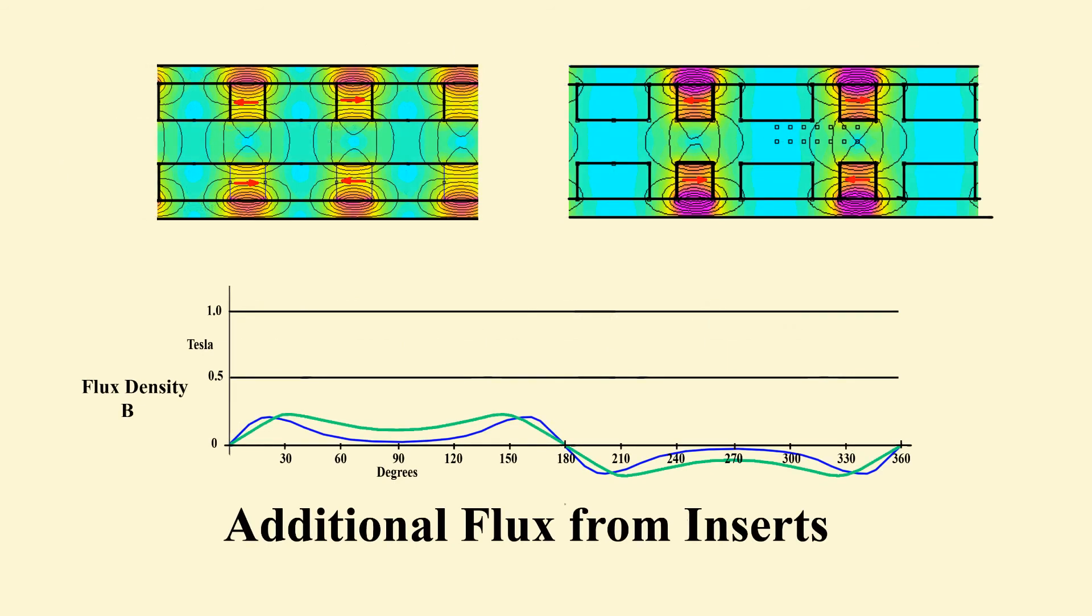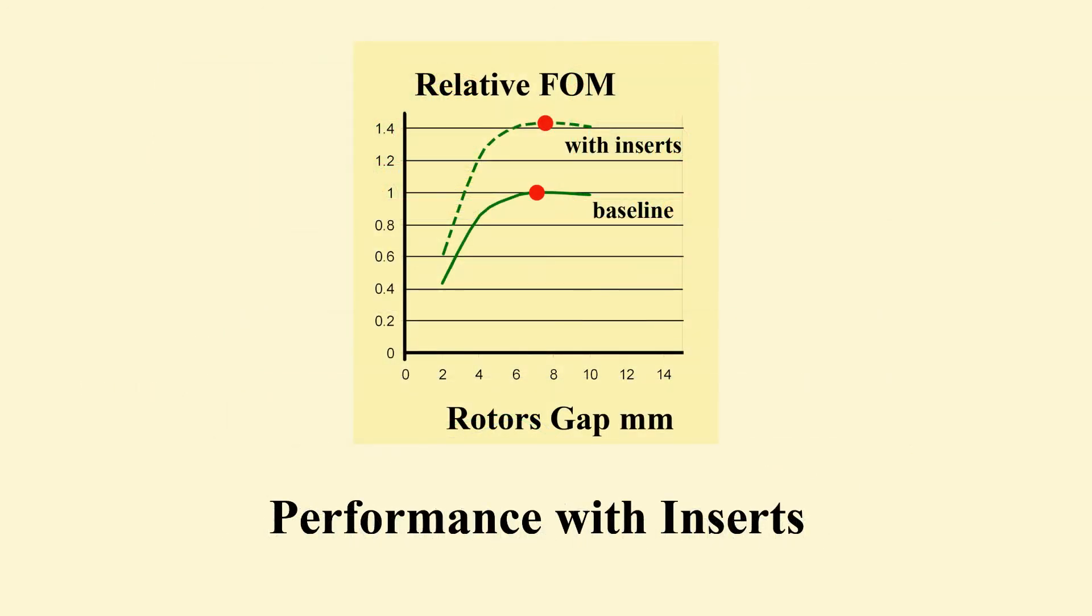This shows only the flux density generated by the extra magnets. Most is shorted through the backing disc and does not traverse the coil. The benefit is thus limited. This is the resultant figure of merit. A more than expected 30% reduction in dissipation is deduced compared with the baseline.